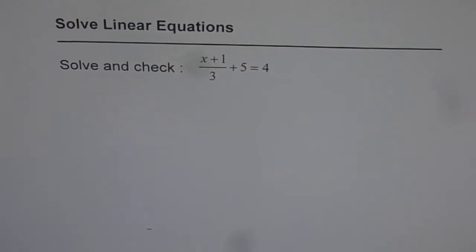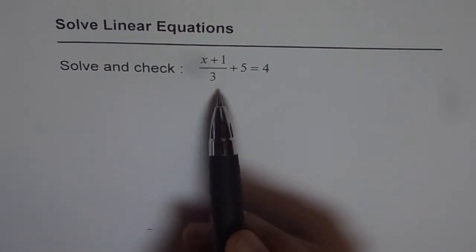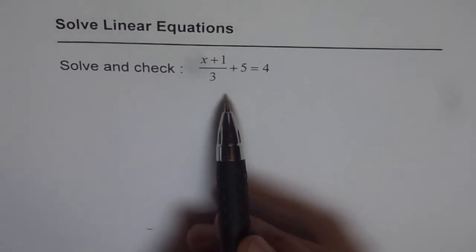Here is a variation to our linear equation. It has mixed numbers, fractions and whole numbers. Let's solve and check. x plus 1 divided by 3, plus 5 equals 4. I'd like you to copy, solve the question, and then look into my solution.